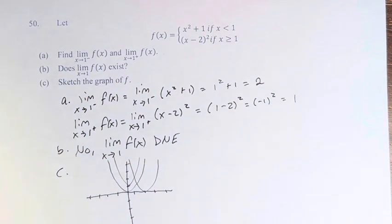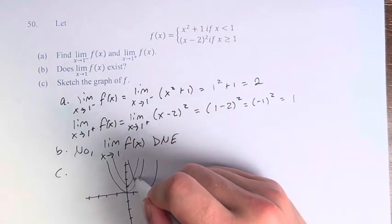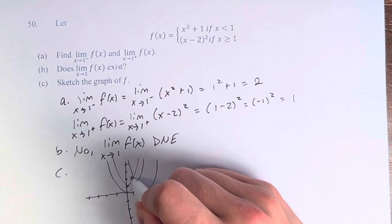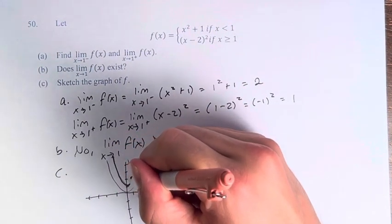Now this looks like a mess, but then we draw our domain restrictions in pen. We have x squared plus 1 if x is less than 1. So that is here, x to that 1, open circle. We fill in the rest.